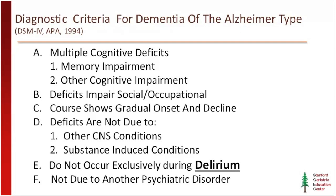The definition of Alzheimer's type dementia includes multiple cognitive deficits — memory impairment and other cognitive impairments — that impair social and occupational functioning. The course shows gradual onset and decline, the deficits are not due to another CNS condition, are not substance-induced, do not occur exclusively during delirium, and are not due to another psychiatric disorder.